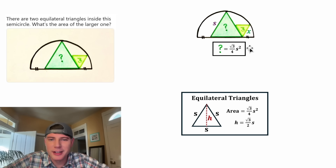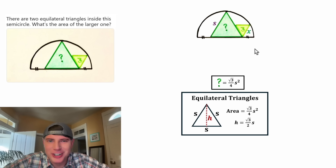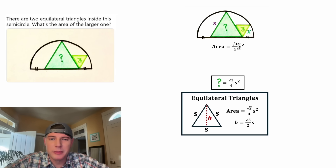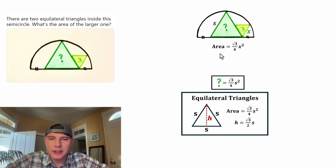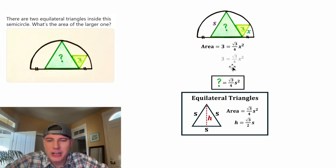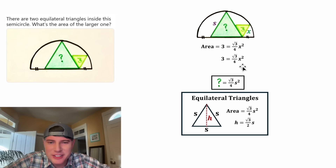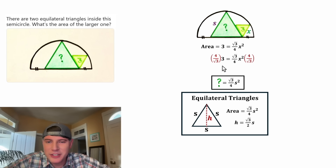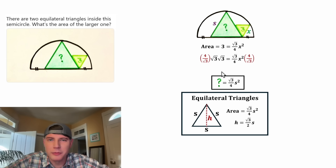Let's put a box around it and move it down. Now we can focus on the smaller triangle. Since we're given the area, let's do the area formula again — this time it'll be root three over four X squared, because X is the side length of that triangle. We know this area is equal to three, so three equals root three over four X squared. To get X by itself, let's multiply both sides by the reciprocal. We can think of three as root three times root three, and those root threes cancel, leaving us with four radical three.